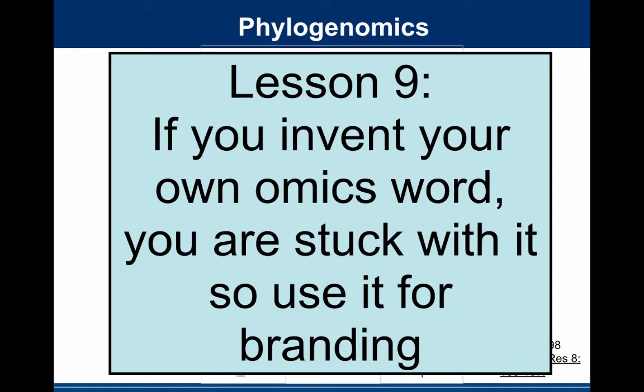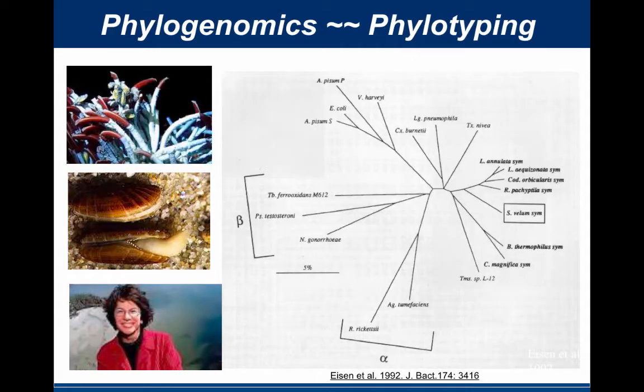I outlined a method I called phylogenomics for building these evolutionary trees and integrating phylogeny of sequences in the prediction of function. Another lesson: if you invent your own omics word, you're stuck with it — so now my blog is phylogenomics.blogspot, my Twitter is phylogenomics, my lab page is phylogenomics, and so on. I don't think I defined the word really well — I defined it as using genome evolution to predict functions of genes — and there are actually better uses of the term for fully integrating genomic and evolutionary reconstructions, but I'm stuck with the omics word.